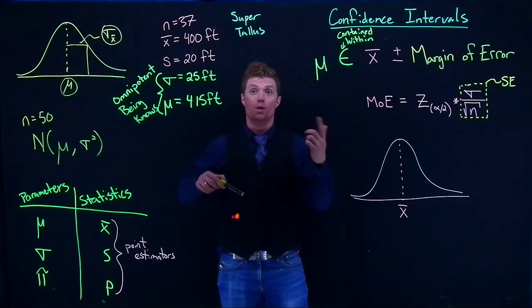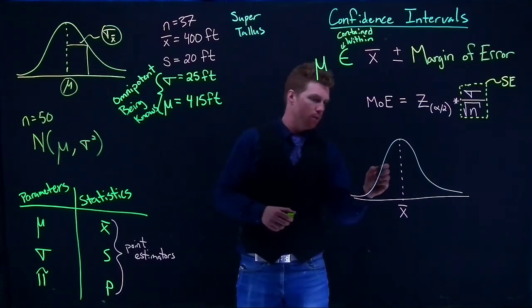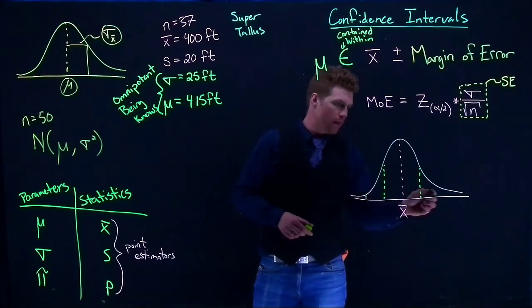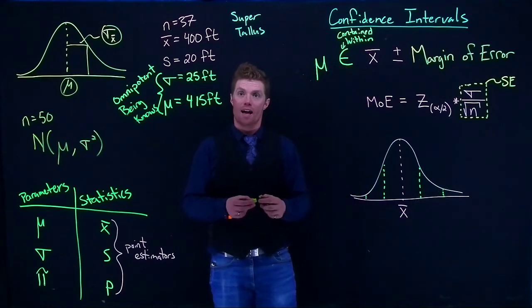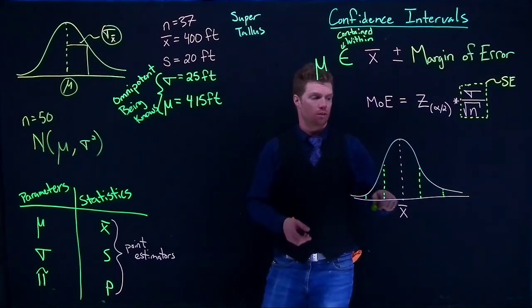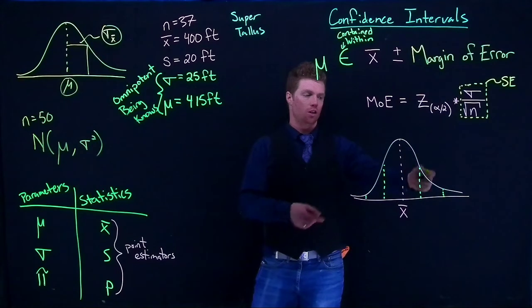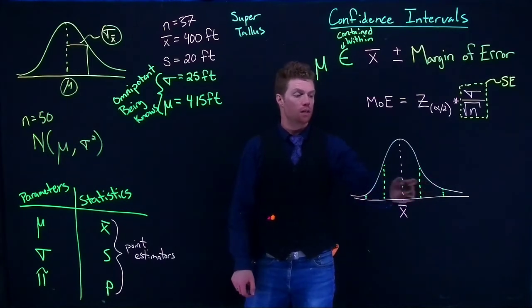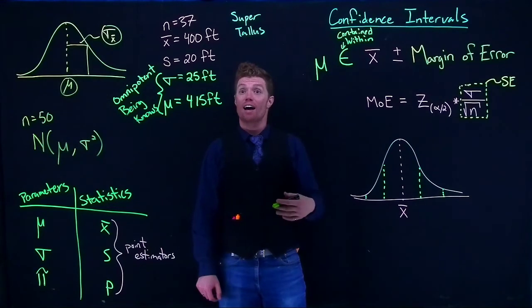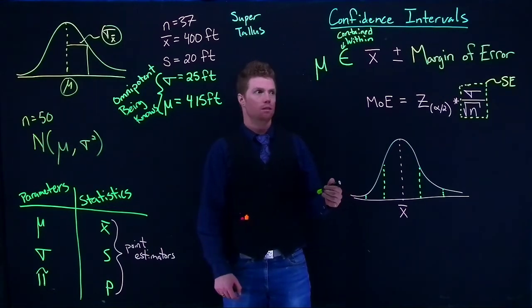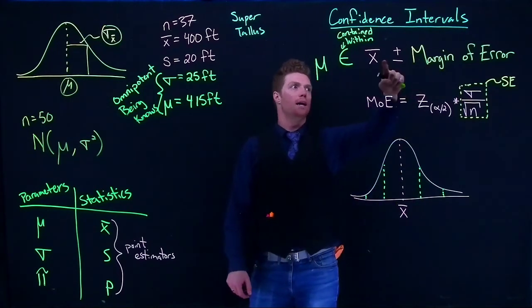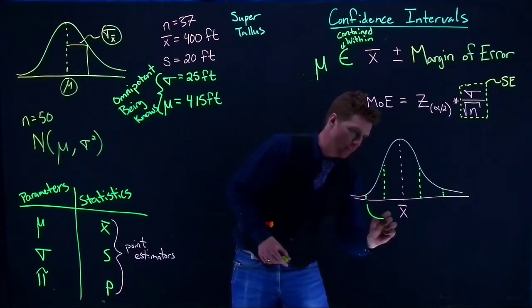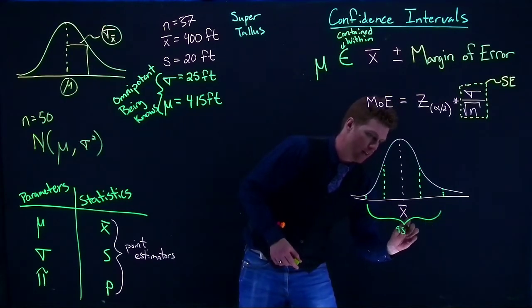Or we could say 98% or 80% confident — but there are trade-offs when we have more or less confidence. Thinking back to the empirical rule: plus or minus one standard deviation captures 68%, and plus or minus two standard deviations captures about 95%. So if I go plus or minus two standard deviations from my mean, I can say I'm 95% confident that the true population mean is within that margin of error.